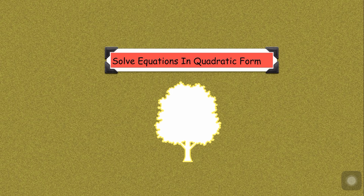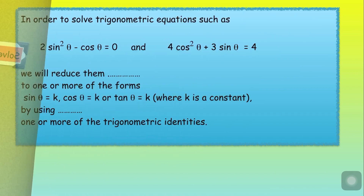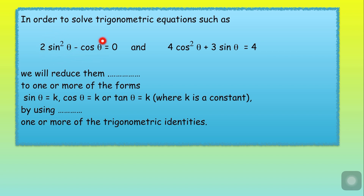Solve equations in quadratic form. To solve trigonometric equations such as 2sin²θ − cosθ = 0 or 4cos²θ + 3sinθ = 4, we reduce them to one or more of the forms sin θ = k, cos θ = k, or tan θ = k, where k is a constant, by using trigonometric identities.